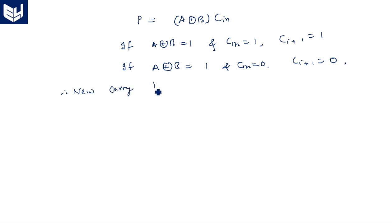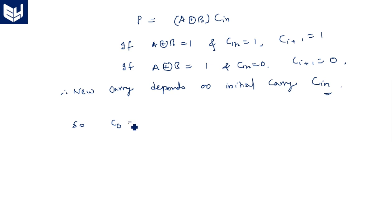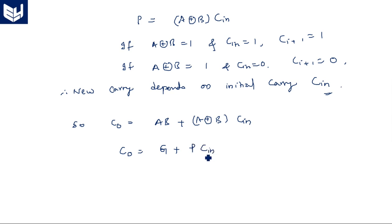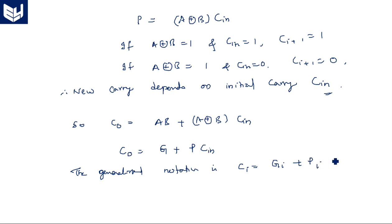The new carry depends on the initial carry Cin. So you can write C0 = AB + (A XOR B) AND Cin. C0 is nothing but the output carry. Output carry = AB + (A XOR B) AND Cin. We can write C0 = carry generate + carry propagate AND Ci (initial carry). The generalized notation is: Ci = Gi + Pi · Ci-1.